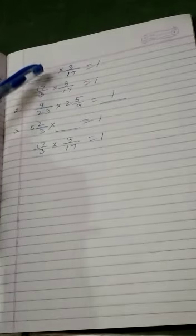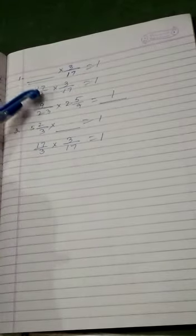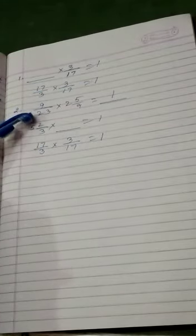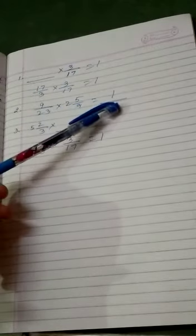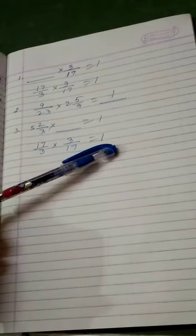So, if we have taken a blank is there with 3 by 17, so multiplication of the multiplicative inverse of the number, so if 3 by 17 is there, so 17 by 3 will be multiplied with a given number to get 1. If 9 by 23 is there, so we have to multiply it with 2 whole 5 by 9, that is equals to, we will get 1. 5 whole 2 by 3, that is 17 by 3, if we will multiply it with 3 by 17, the multiplicative inverse of that, then we will get as 1.